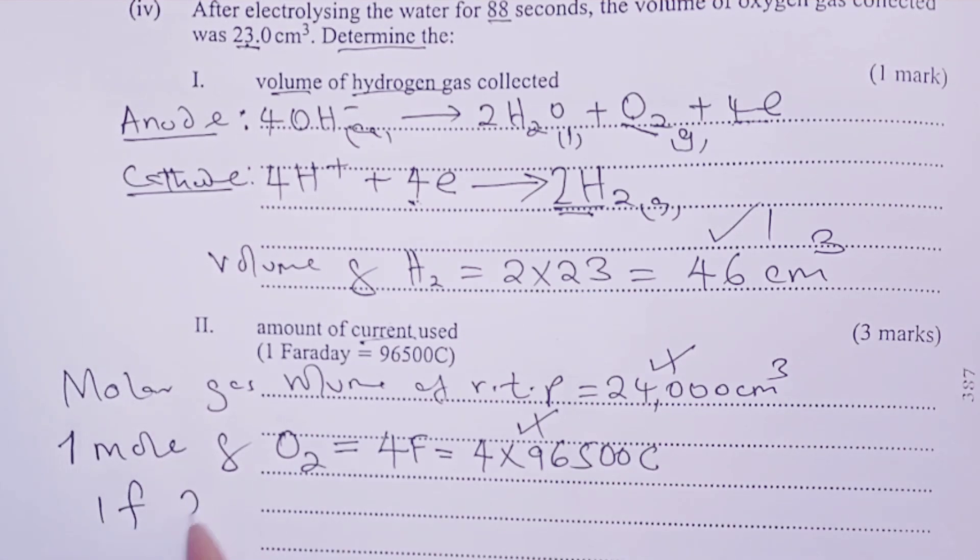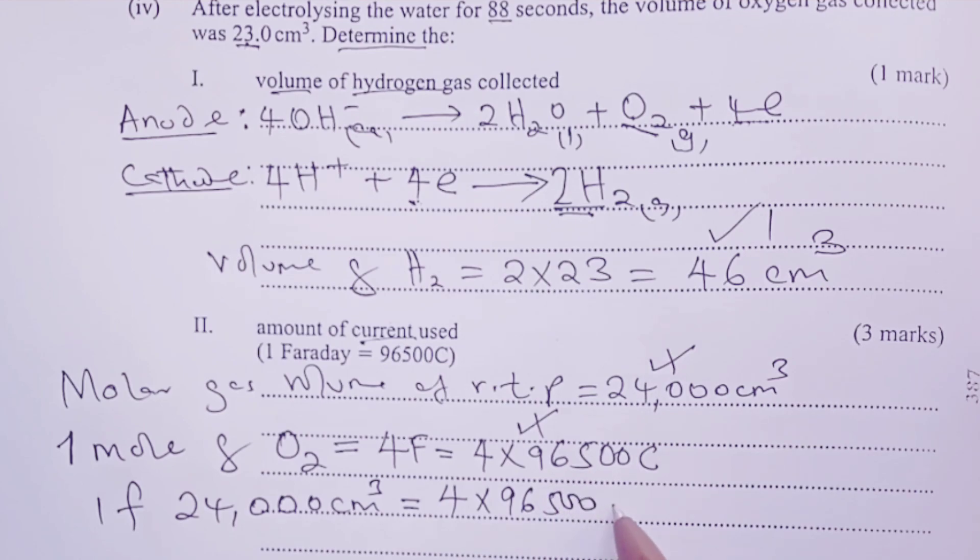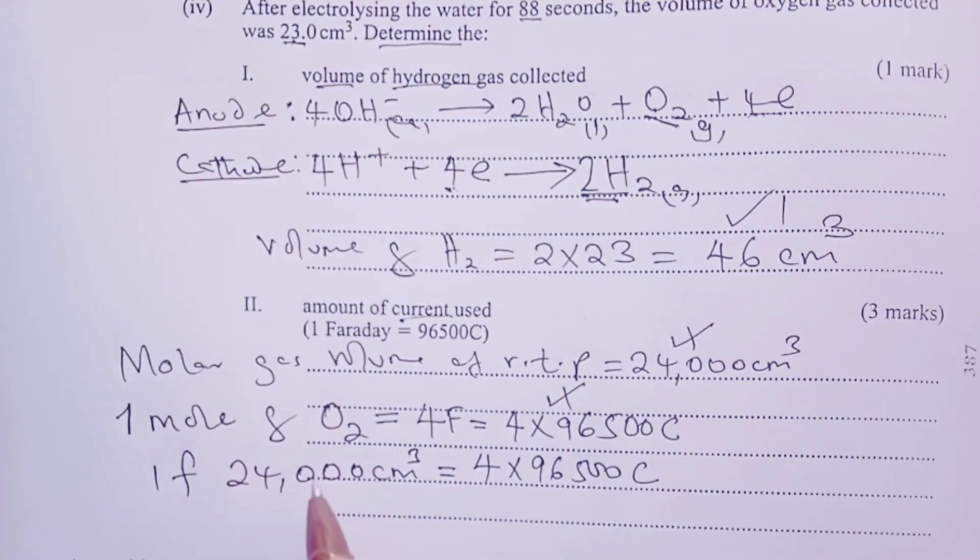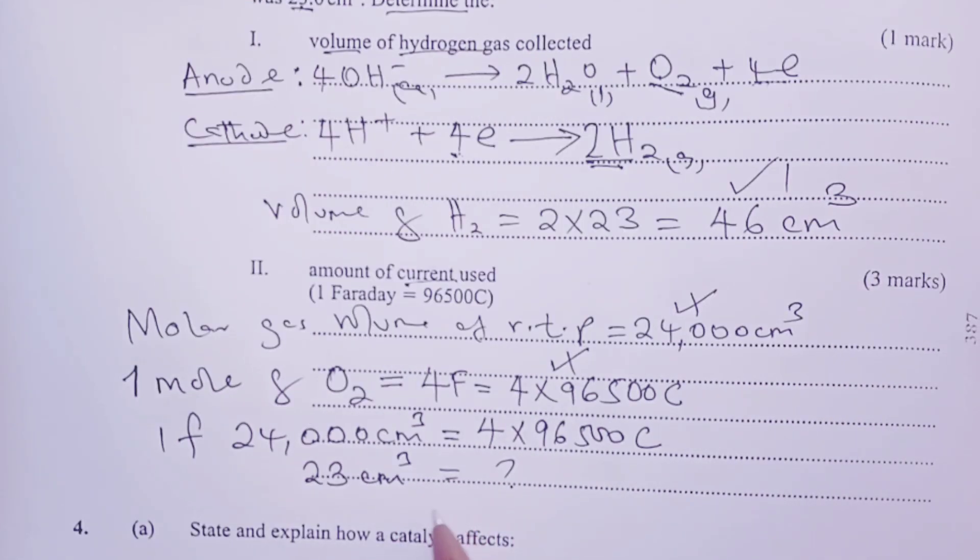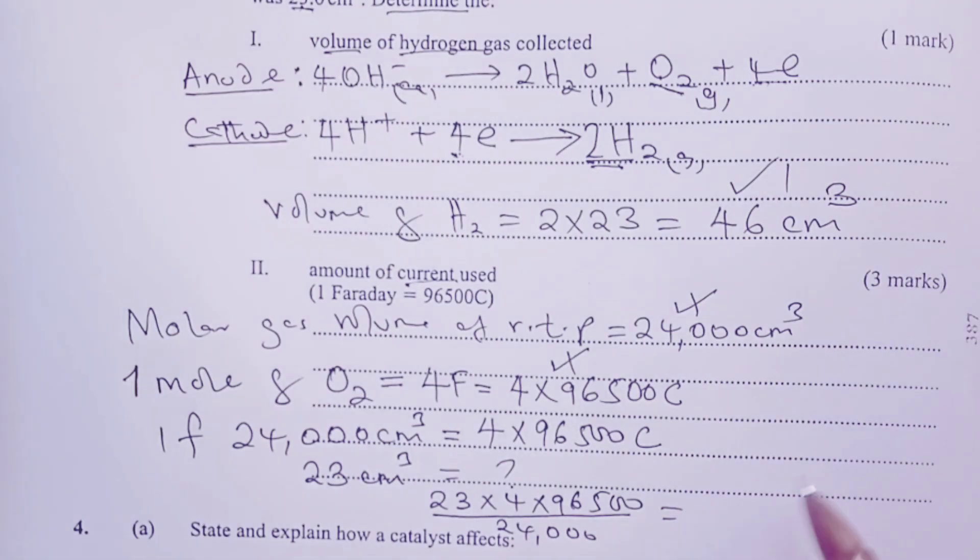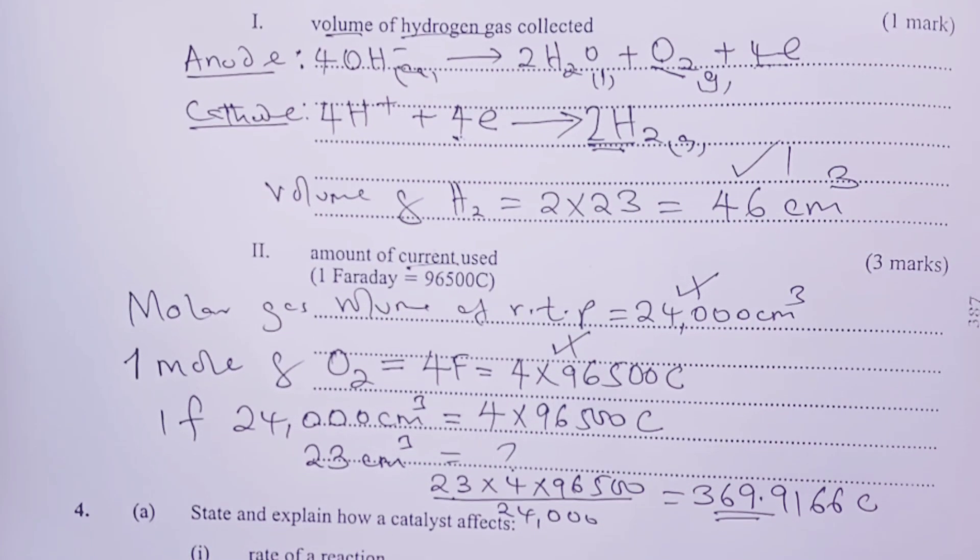The next thing we want to do is now to relate this molar gas volume to the volume or the moles of oxygen that would be produced. So, if we look at our equation, one mole of oxygen is produced when we involve four moles of electrons. The interpretation of this in terms of electrochemistry is that every mole of oxygen needs four faradays to be released, which are equivalent to four multiplied by 96,500 coulombs. Doing this multiplication by four would earn our students the next mark. The next thing we would do is to ask ourselves that if 24,000 cubic centimeters of oxygen, which is the molar gas volume at RTP, would be produced by four multiplied by 96,500 coulombs as quantity of electricity. How much quantity of electricity would we use to produce only 23 cubic centimeters that were actually produced as per the instructions of the question?